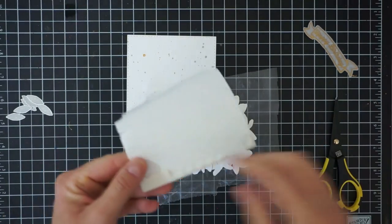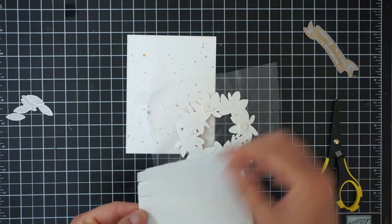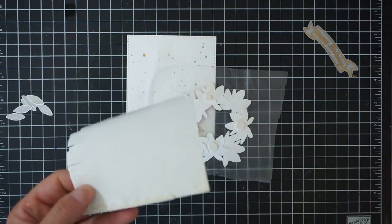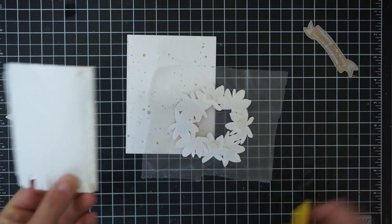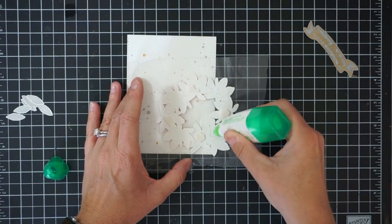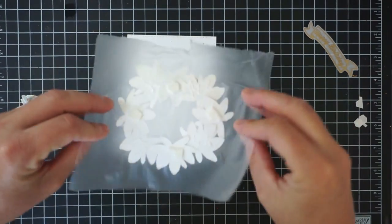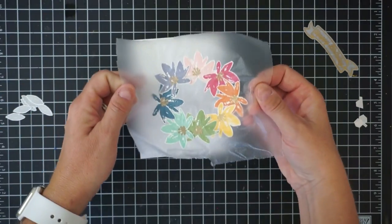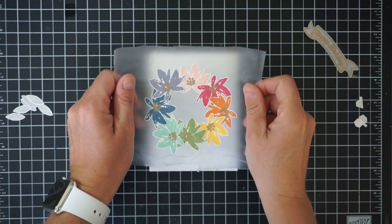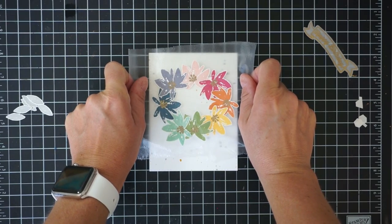I'm just going to add a combination of dimensionals on the back of these flowers and then some Tombow glue. Some of these flowers will be popped up and some of them will be adhered down to the panel. This kind of gives the wreath some interest with some popped up areas and some flat areas. Now I'll just pick that entire piece up with this press and seal. Look how cool this is - you can move this around. This press and seal makes it really easy to deal with a lot of die cuts at one time.